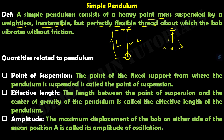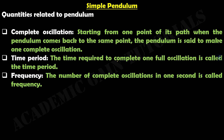The amplitude is the maximum displacement of the bob on either side of the mean position. This maximum displacement is our amplitude. A complete oscillation means starting from one point, the pendulum goes to maximum amplitude on one side, comes back through the mean position X, goes to maximum amplitude on the other side, and returns to the starting point.